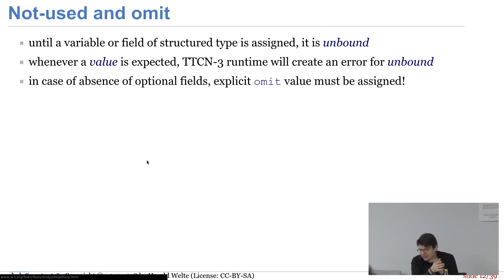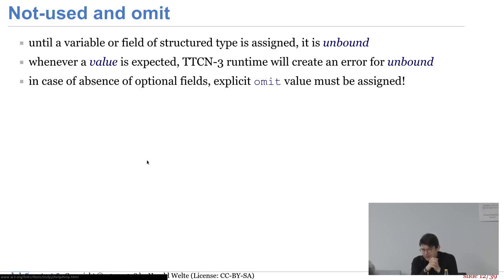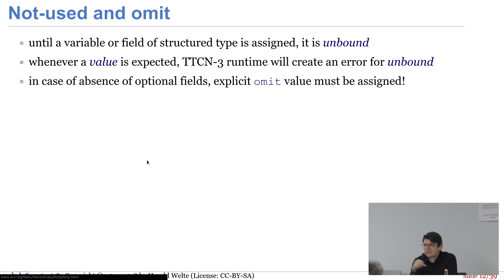Ein häufiges Problem: Man überträgt aus Versehen uninitialisierten Speicher, weil man irgendwo vier von vier Member setzt und einer hat einen Random-Wert. Das kann mit TTCN-3 nie passieren: Wenn ich eine Nachricht versenden möchte und eines der Felder noch keinen Wert zugewiesen hat, ist es "unbound", und etwas Unbound kann nicht enkodiert oder versendet werden. Wenn irgendwo in einer verschachtelten Struktur ein Feld nicht gebunden ist, sagt der Encoder: ich kann das nicht enkodieren.